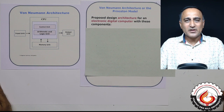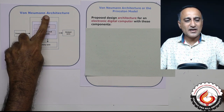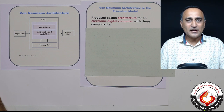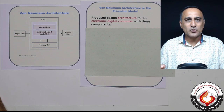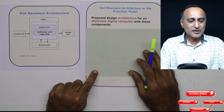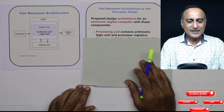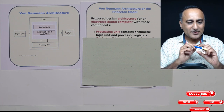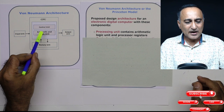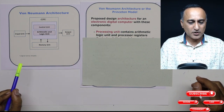Around the year 1943-45, a great scientist by the name von Neumann proposed an architecture of a digital electronic computer. He proposed the following way that this computer should work: it shall have a central processing unit comprising of the control unit and the arithmetic logic unit, along with certain internal memory for usage by the ALU as well as the control unit.